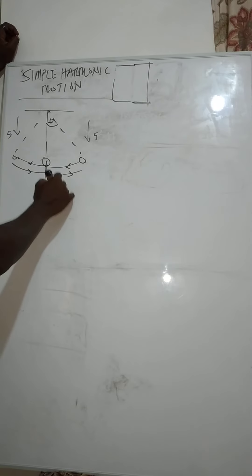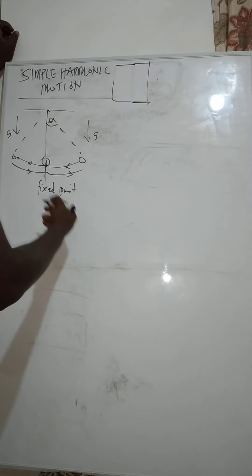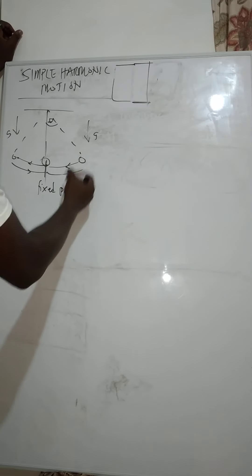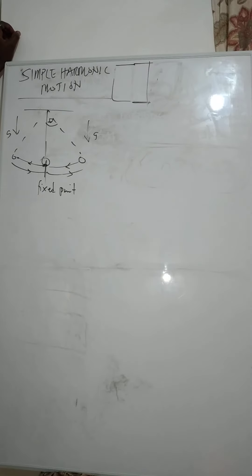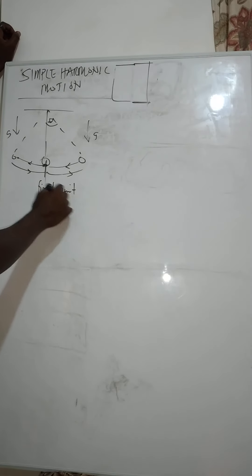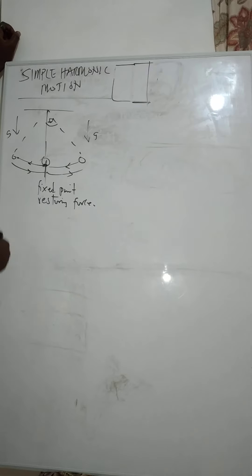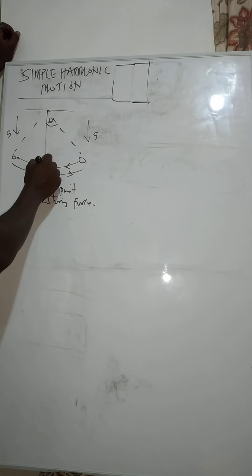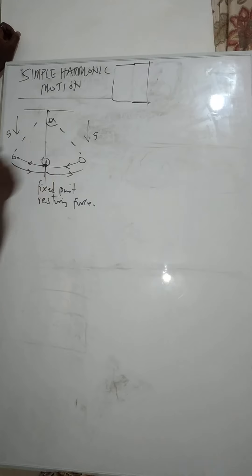Eventually the pendulum settles at a point we call the fixed point of the motion. There is a force that is always trying to move the object towards this fixed point, and we call that force the restoring force. The restoring force is the force that moves an object back to its original position.